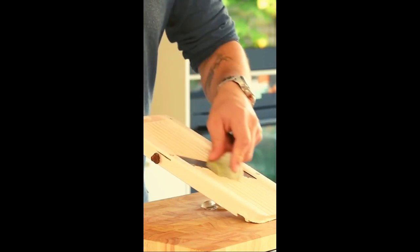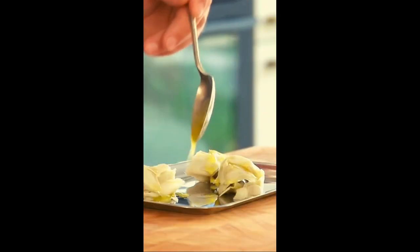Meanwhile slice the remaining artichoke on a mandolin. Season one part with the vinaigrette and deep fry the other part till golden and crispy.